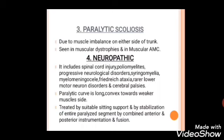Paralytic or myopathic scoliosis is due to muscle imbalance on either side of the trunk. The motor system is involved, leading to muscle imbalances, and it is basically seen in muscular dystrophies and amyotrophic muscular diseases.